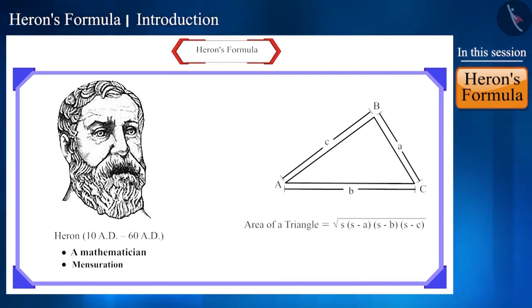Square root of s in brackets s minus a, s minus b, s minus c, which we use to find the area of a triangle. This is called Heron's formula.